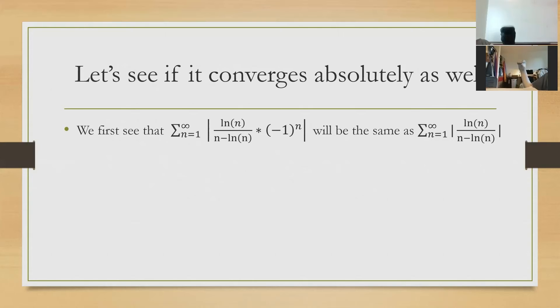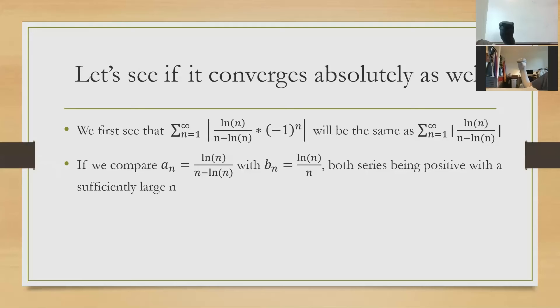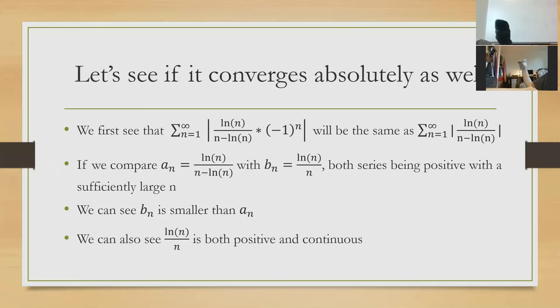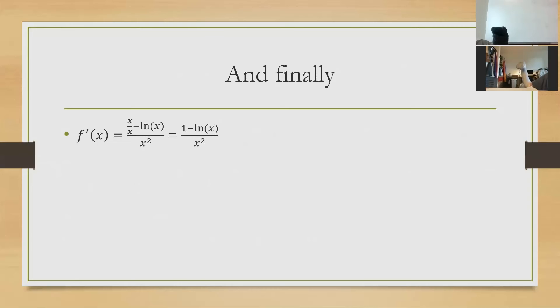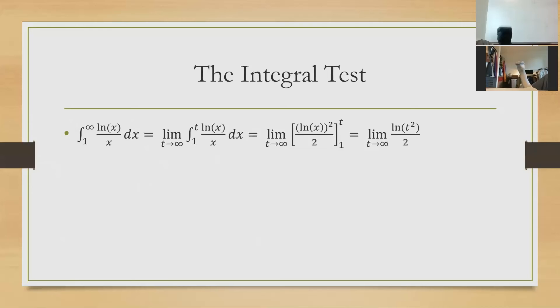But that's not what absolute convergence means — we have to actually check if it converges absolutely. The absolute value of our series is just the summation of natural log of n over n minus natural log of n from 1 to infinity. We can do a comparison test between a sub n, which is natural log of n over n minus natural log of n, and b sub n, which is natural log of n over n. Since the denominator in b sub n is greater than the denominator in a sub n, we know b sub n is smaller than a sub n. We can verify b sub n is positive, continuous, and its derivative equals 1 minus natural log of x over x squared, which is negative for all values greater than 1 — so b sub n is also decreasing.